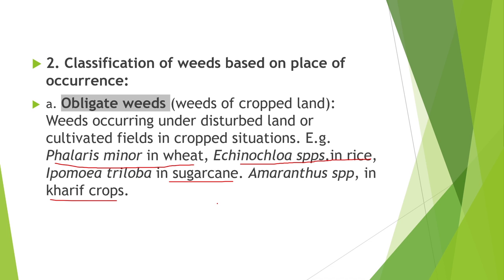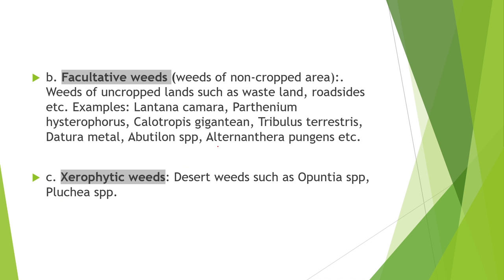Second is facultative weeds — found in non-cropped areas such as roadsides and wastelands. Examples are Lantana camara, Parthenium hysterophorus, Calotropis gigantea, Tribulus terrestris, Datura metel, Abutilon species, and Alternanthera pungens. Third type is xerophytic weeds — found in desert areas. Examples are Opuntia and Pluchea species.